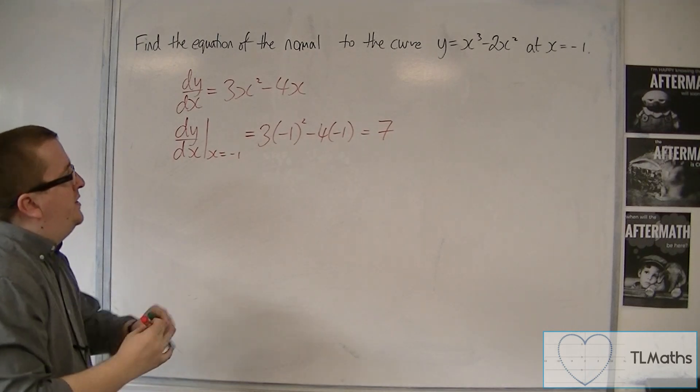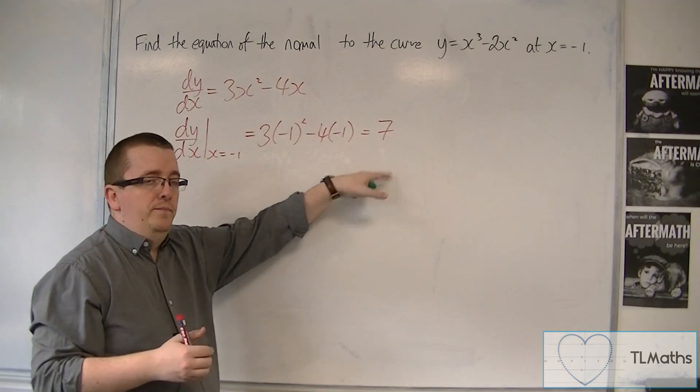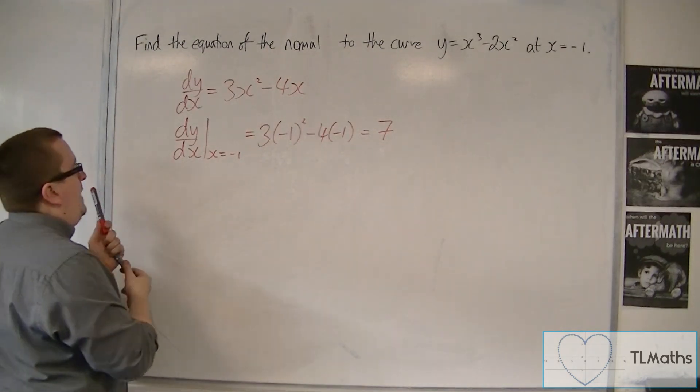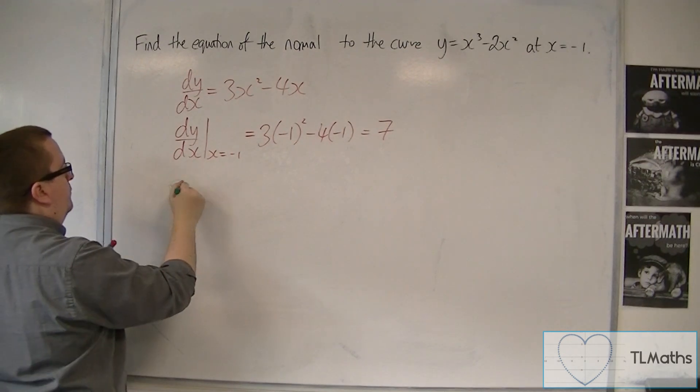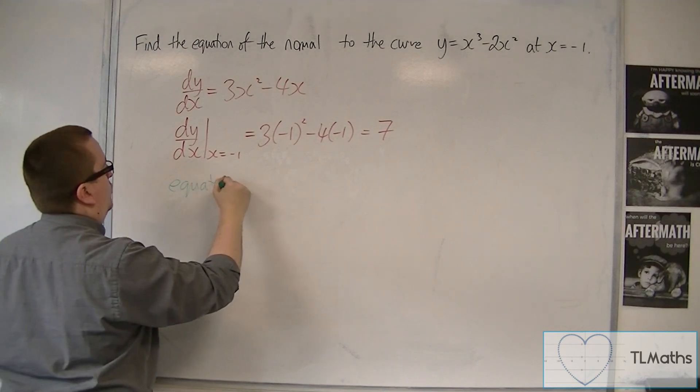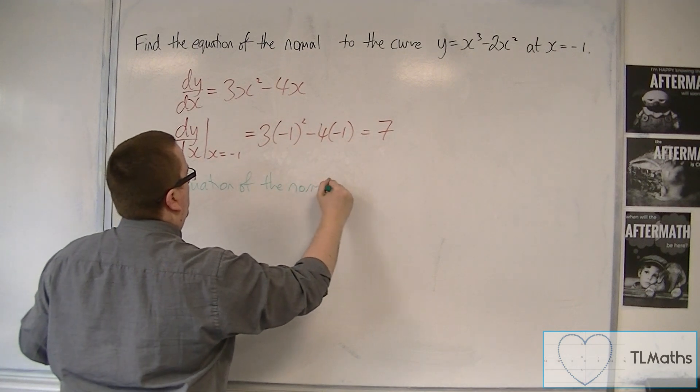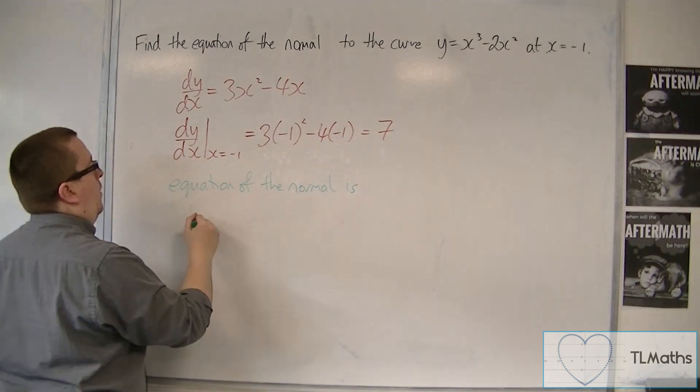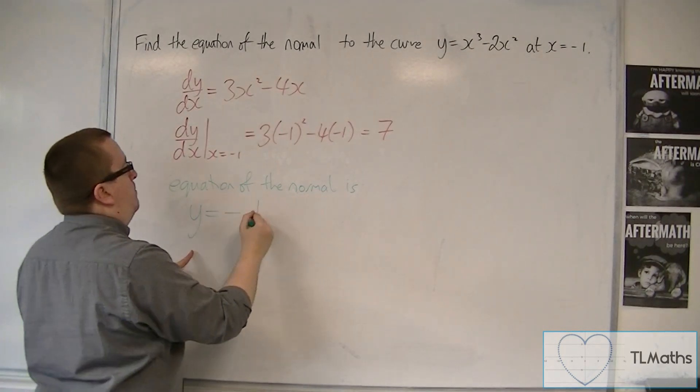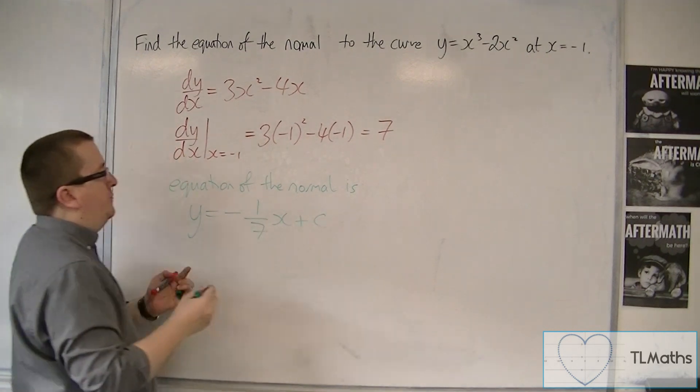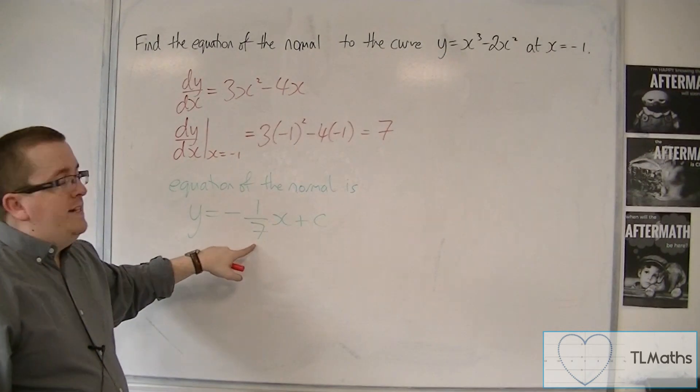OK, so that is the gradient of the tangent at x equals minus 1. OK, so the gradient of the normal, or rather if I write the equation of the normal: equation of the normal is y equals, now we need to use the negative reciprocal of that, so that's minus 1/7th x plus c. So that was the gradient of the tangent, that's the gradient of the normal.